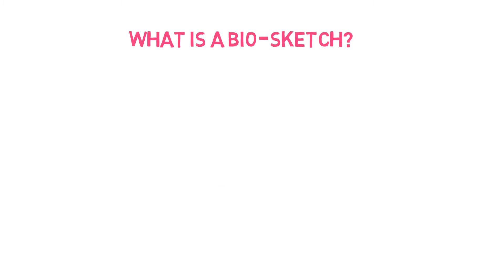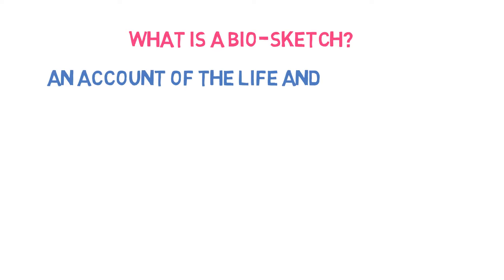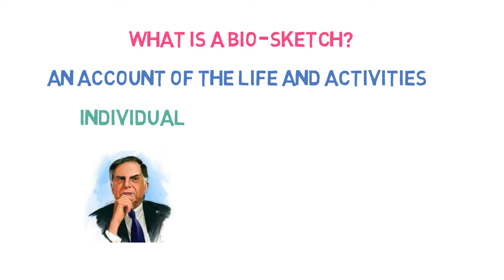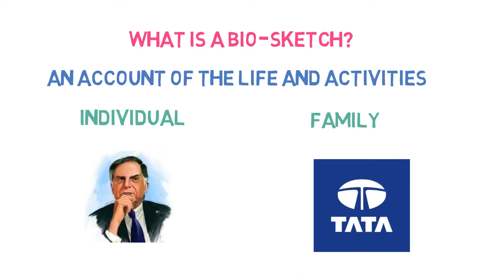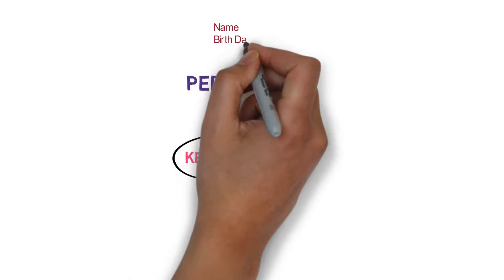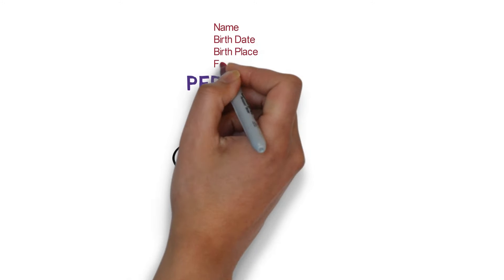What is a biosketch? Biosketch, also known as biographical sketch, is an account of the life and activities of an individual like Ratan Tata, or a family like the Tata group. It includes three key elements of the person's life. First, personal details, including name, date of birth, place of birth, and family background.